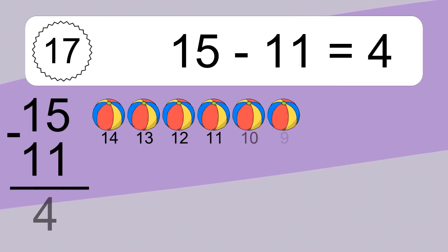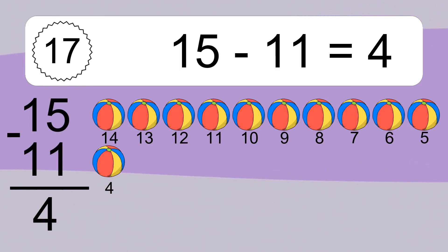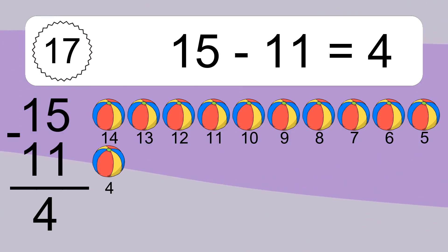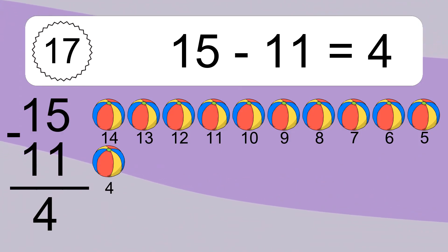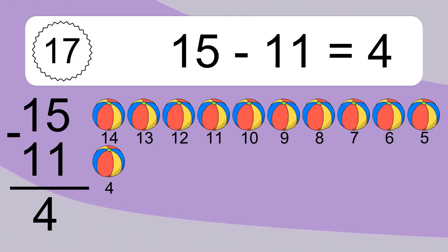15 minus 11 equals what? 15 minus 11 equals 4. Let's count it: 14, 13, 12, 11, 10, 9, 8, 7, 6, 5, 4.